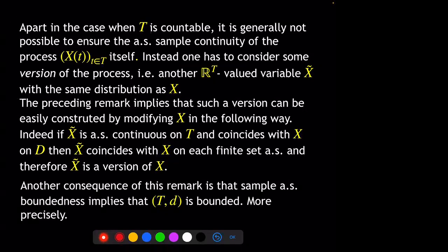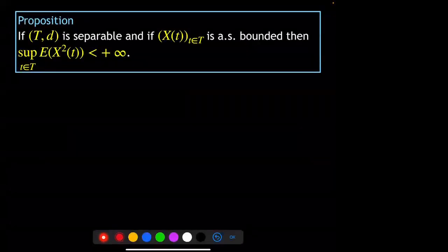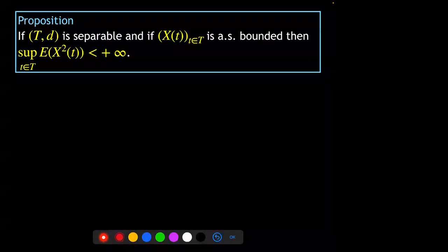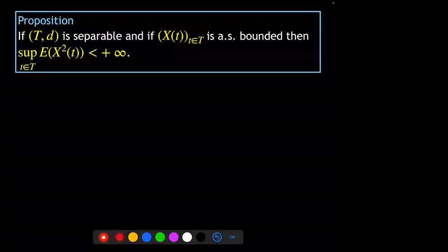Another consequence is that if the samples are almost surely bounded, then the parameter set is bounded in the following sense: if T equipped with distance d is separable and the process is bounded, then the supremum of E[X_t^2] over T is finite.